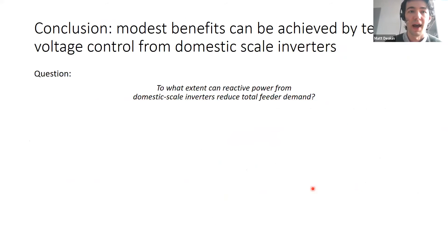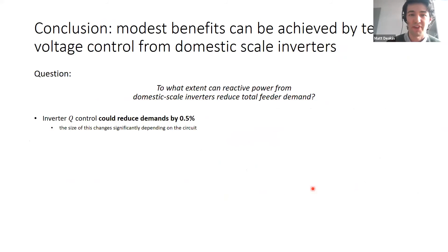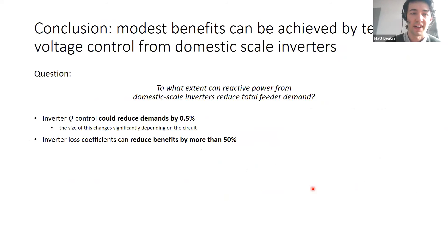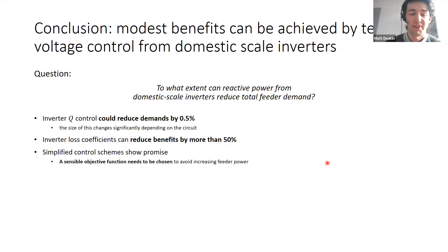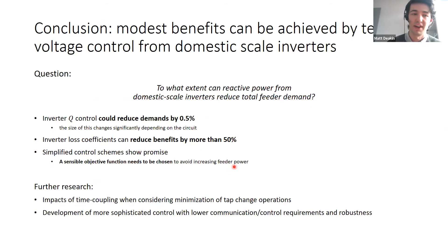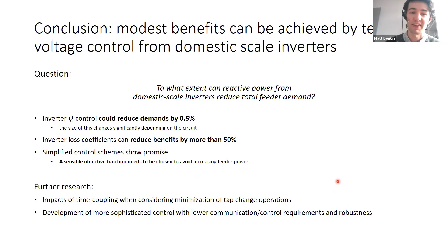To conclude: to what extent can reactive power from domestic scale inverters reduce total feeder demand? We reckon about 0.5% might be about right, depending significantly on the circuit. Loss coefficients can reduce these benefits by perhaps 50%. Simplified control schemes could show promise, but you need a sensible objective function — just minimizing load or losses alone is unlikely to give full benefits. Future work should address impacts of time coupling and the additional control problems discussed earlier in the session.